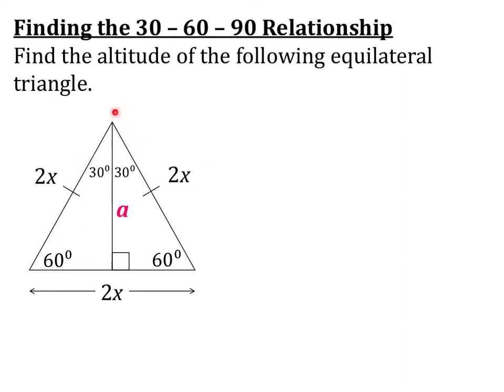Here I have labeled each of these as 30 degrees. That's because when we draw in the altitude, we know that it bisects the angle, so it cuts 60 in half leaving us with two 30-degree pieces, and it's also the perpendicular bisector of our base.